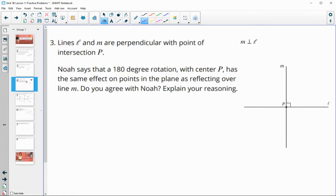Number three, lines L and M are perpendicular with the point of intersection P. Noah says that a 180 degree rotation with center P has the same effect on points in a plane as reflecting them over line M.